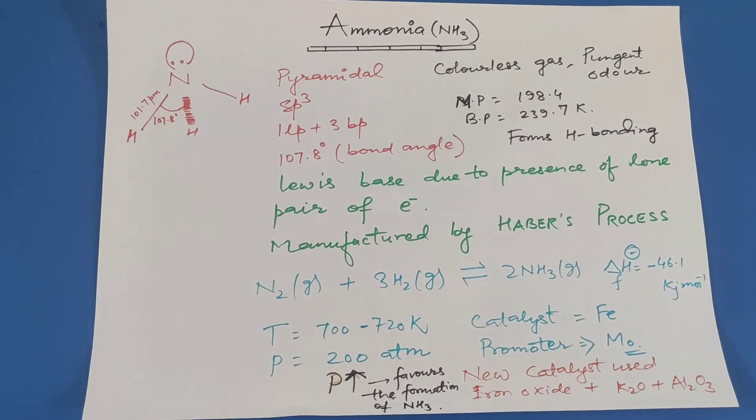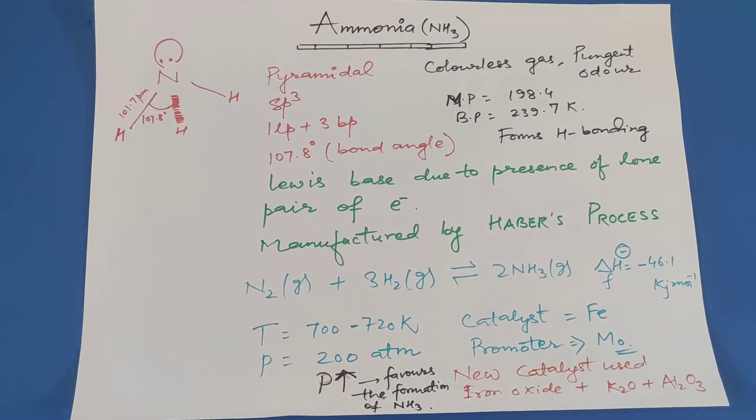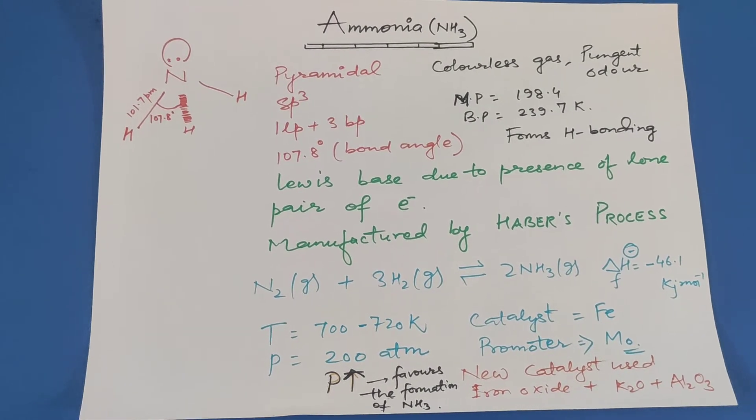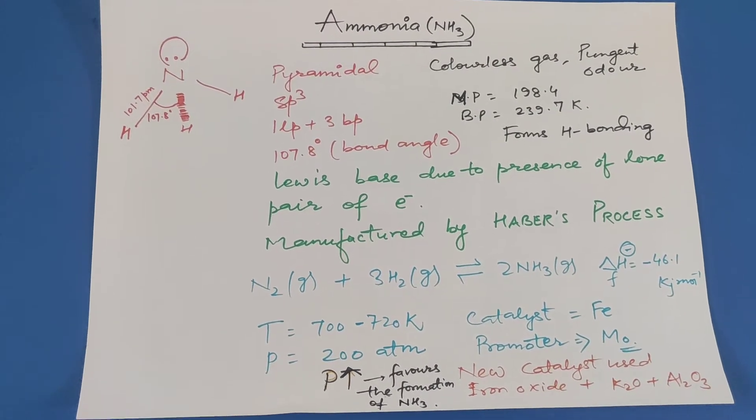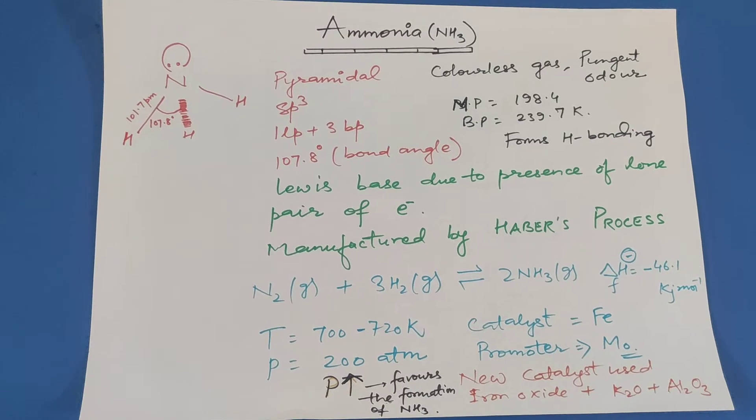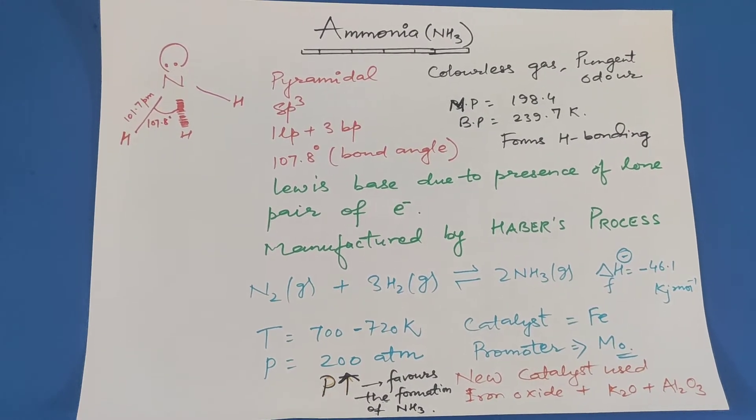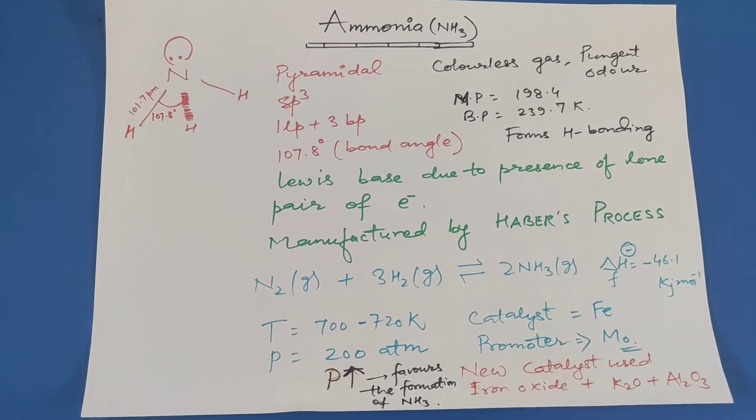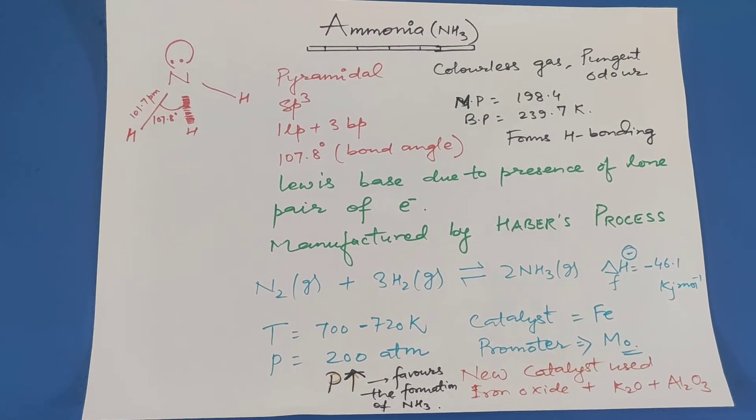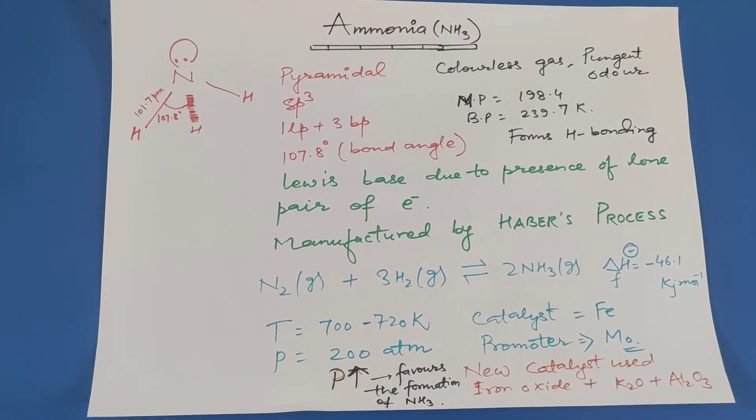The catalyst used is iron and the promoter is molybdenum. Promoters are not catalysts. Promoters are substances which increase the efficiency of a catalyst. The new catalysts used are iron oxide, K2O, and alumina.